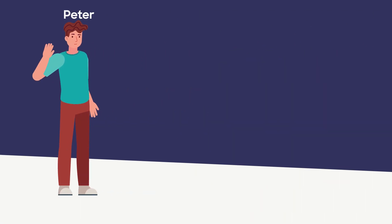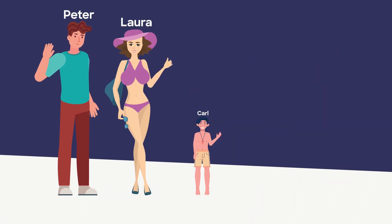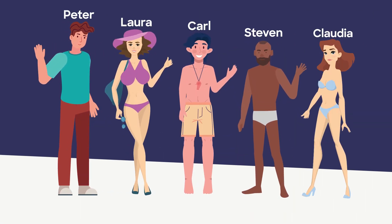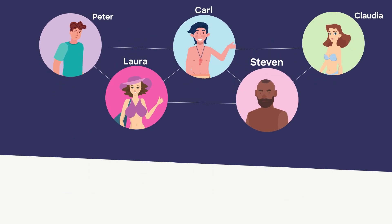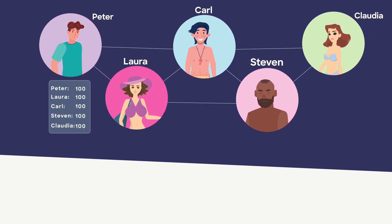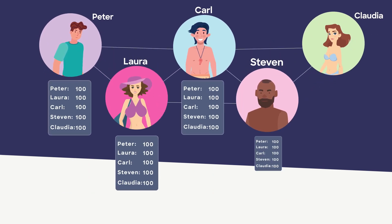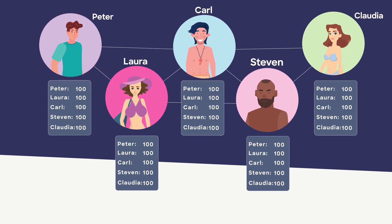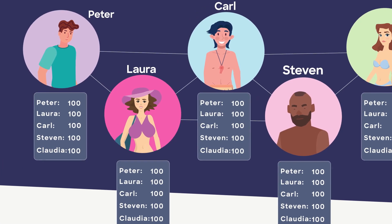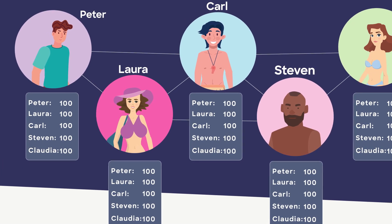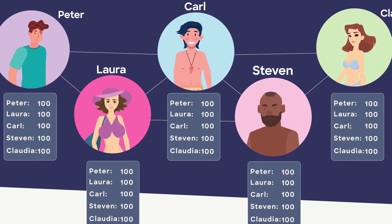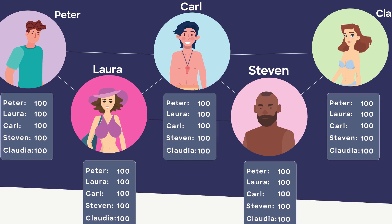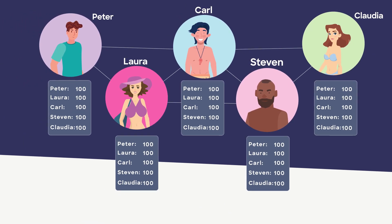Meet my five friends: Peter, Laura, Carl, Stephen, and Claudia. They will interact in the same way the blockchain does. Each of them has an individual notebook, and they all have the same information there — their names and the balance each of them has. Let's say $100. That's going to be our starting point.